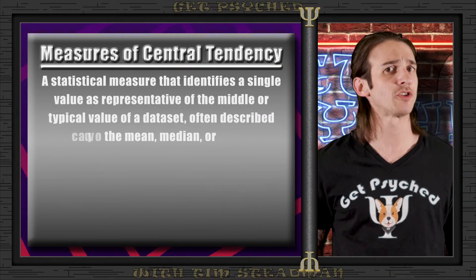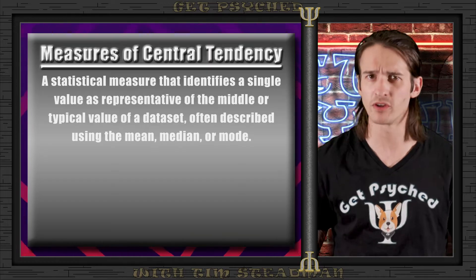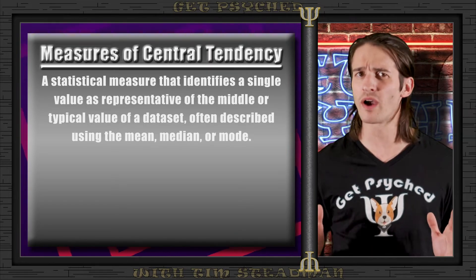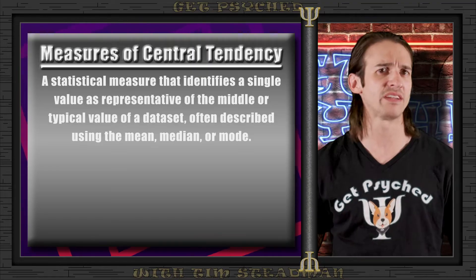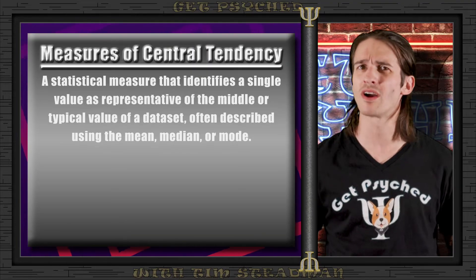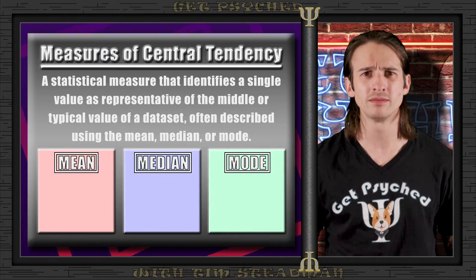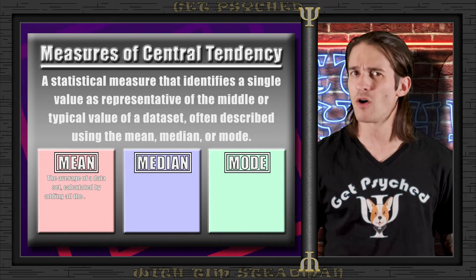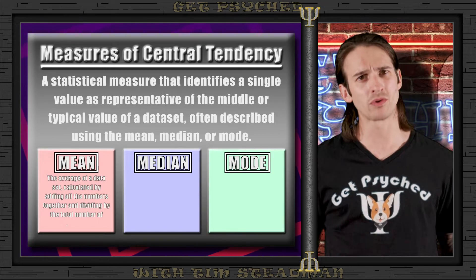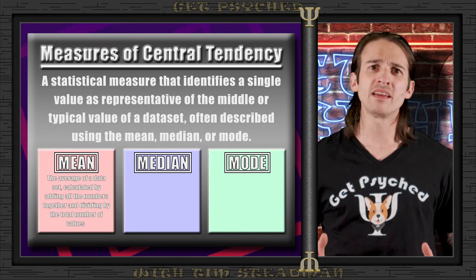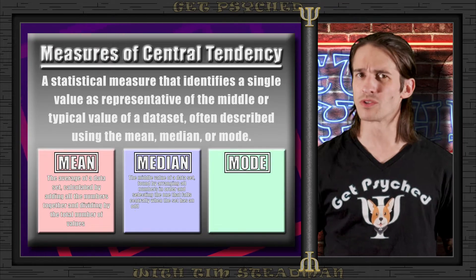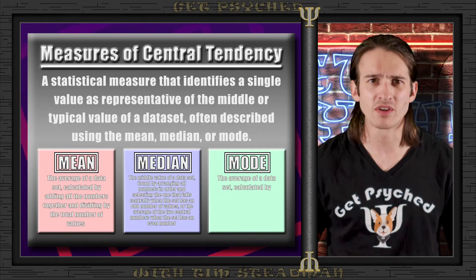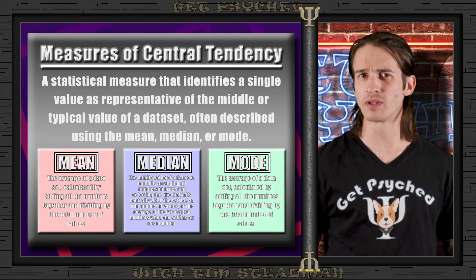These are statistics most of you are familiar with. Central tendency gives us a snapshot of the middle or averages of a data set — we're talking about the mean, median, and mode. The mean is your average score, calculated by adding all scores and dividing by the number of scores. The median is the middle score when all scores are arranged in order. And the mode is just the score that appears most frequently.